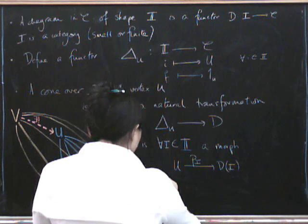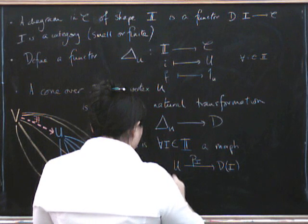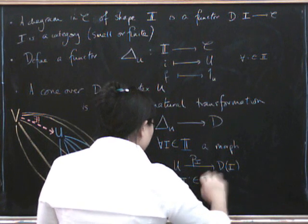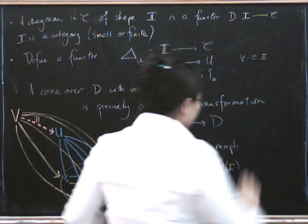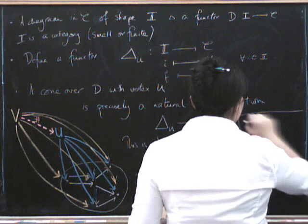So this is a naturality square. We've got to have this at i going along the top.